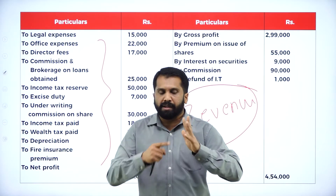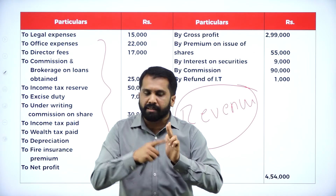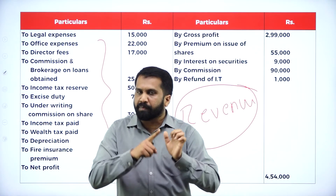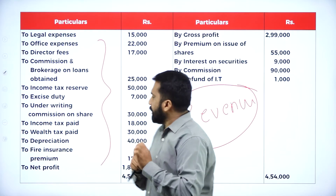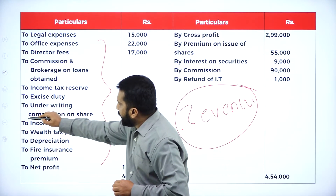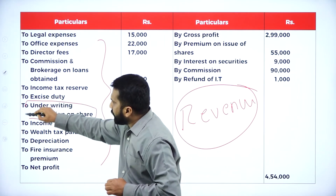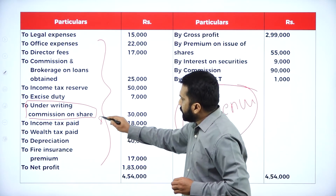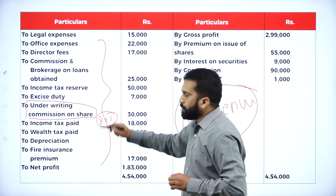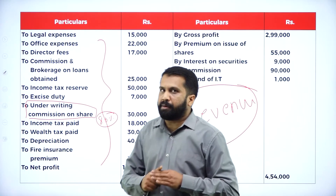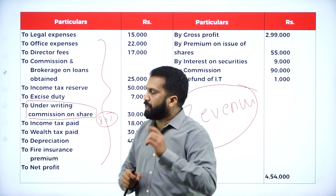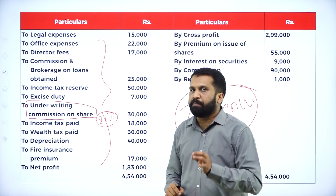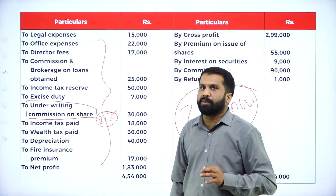All the reserves, all the provisions, all the personal expenses, depreciation — and along with that, if you have anything like underwriting commission, remember: up to 80% is disallowed, the remaining 20% will be allowed. Remember this — in every problem you will get this statement: underwriting commission, up to 80% we call it as disallowed, remaining 20% we call it as allowed item.